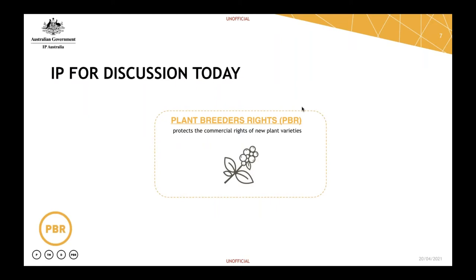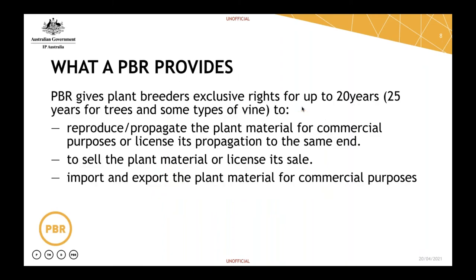Getting back on track, we're going to talk about plant breeder's rights. Plant breeder's rights give the breeder exclusive rights for up to 20 years in most cases, and 25 years in the case of trees and some types of vine, to reproduce and propagate plant material for commercial purposes or license its propagation. Also to sell the plant material or license its sale, and import and export the plant material for commercial purposes. The licensing component is key — it gives you an opportunity to grow a business and significantly increase revenue streams.